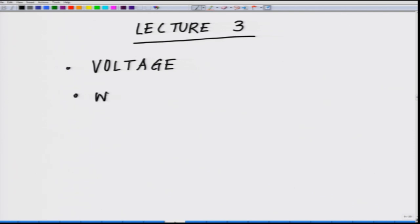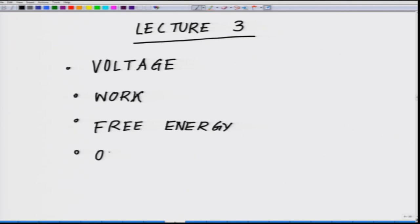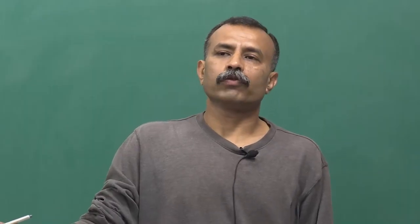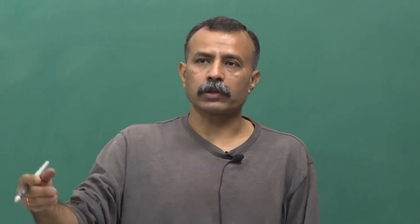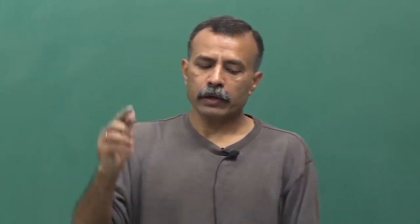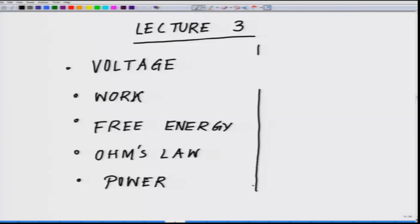We will be dealing with work or work done — these are all basics you've done, but we are just revising. We will talk about free energy, then Ohm's law, followed by power. Whenever we talk about a battery, a cell, or any kind of energy storage device, we talk about power — for example, milliampere-hour. We will be dealing with these basic terms today before we move on to the Galvanic cell and the Nernst equation.